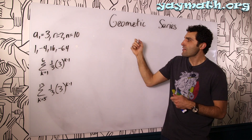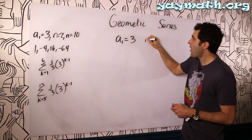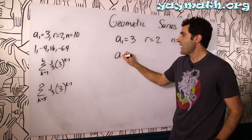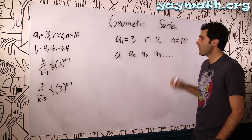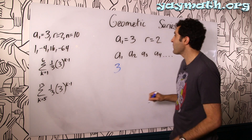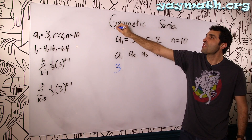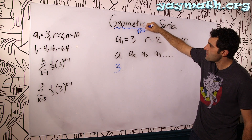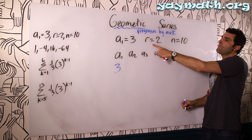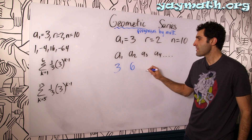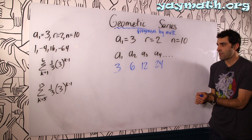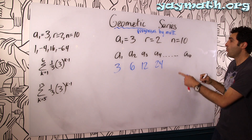Let's look at this first one. a1 equals 3, r equals 2, and n equals 10. a1 is the first term in the sequence — a1, a2, a3, a4, and so forth. The first term is 3. The ratio, or rate of multiplication, is times 2 because it's geometric — a geometric sequence progresses by multiplication. So: 3, 6, 12, 24... and n is 10, meaning the number of terms is 10, so we're going all the way down to a10.